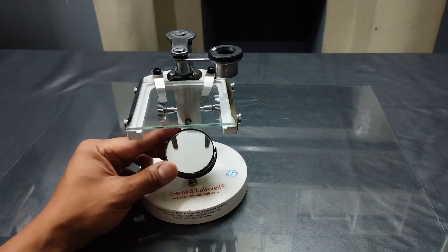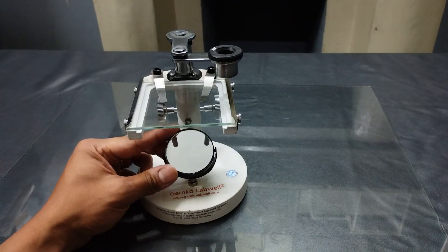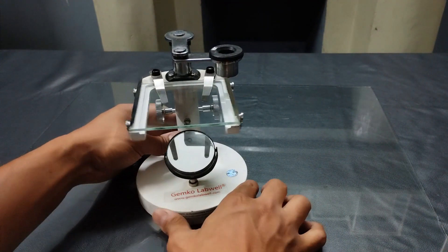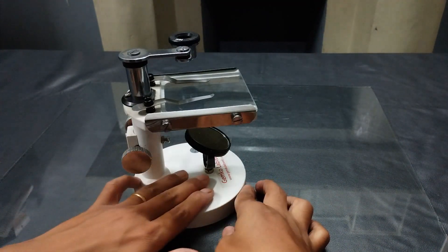The reflecting mirror located below the stage has both a plane and a concave mirror on either side. The entire structure is supported on a heavy and sturdy base or foot.